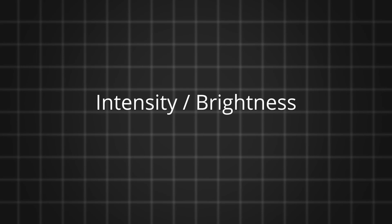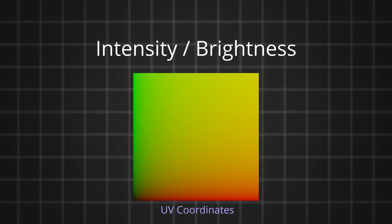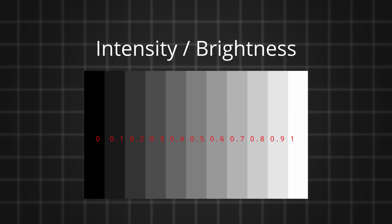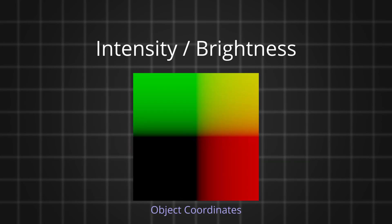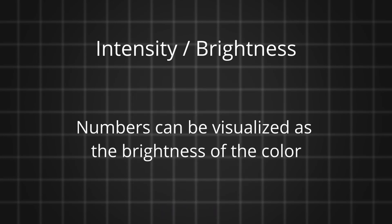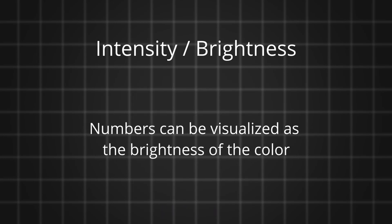Brightness and intensity. To understand this better, let's look at the change in brightness along the x-axis of the UV coordinates. The gradient along the x-axis starts from 0 and goes all the way up to 1 linearly. 0 is absolute black and 1 is white. Any value between 0 and 1 has a shade of grey. In the object coordinate system, values range from -1 to 1, and all the negative values are seen as black.